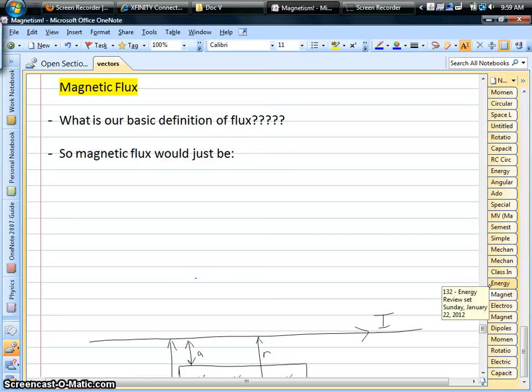Alright, we're back, and we're going to be looking at one other magnetic concept here, which is magnetic flux. Just like we do for electric fields in Gauss's law, to find the total flux coming out of a charge or some object, we can also define flux for magnetism.